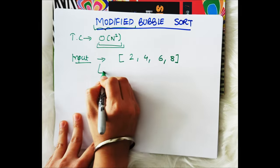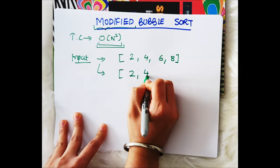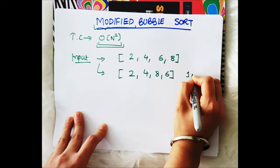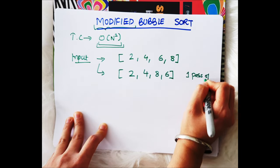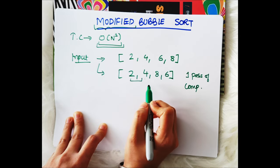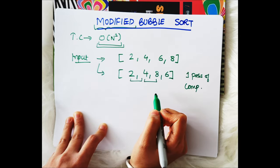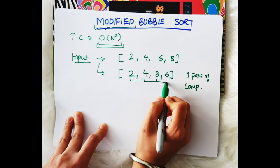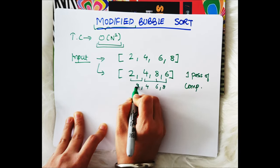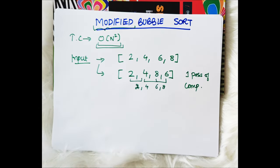Or similarly if let's say our array is 2, 4, 8, 6. So in this case also only one pass of comparisons is enough, right? Because if let's say I compare this, both of them are at correct place. I compare this, both of them are at correct place. And I compare this, I'll get 6 and 8 and now our array is sorted. So we don't need to do the things again and again.